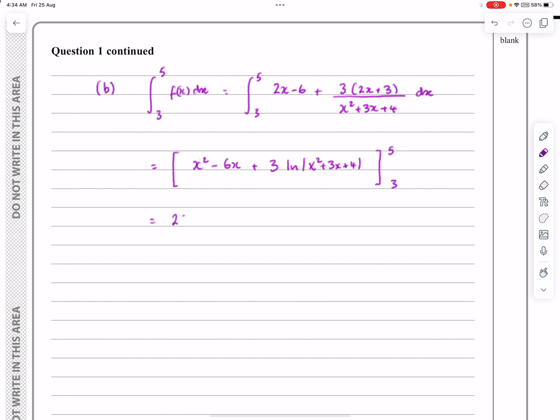So all we've now got to do is put in 5 and put in 3. What I tend to do is to just make it really clear what I'm actually doing. So putting in 5 is going to give me 25 minus 30 plus 3 log 44 there minus, and then with the 3 I'm going to get 9 minus 18 plus 3 log 22 here. So let's sort all that out. The numbers, 25 minus 30, the minus of 9 minus 18, all of that tidies up to 4, plus 3 log 44 minus log 22.